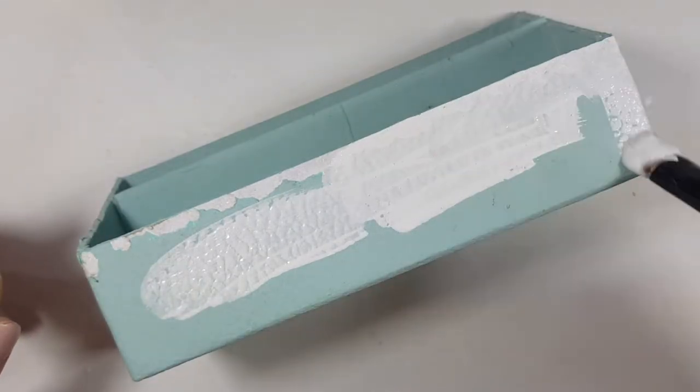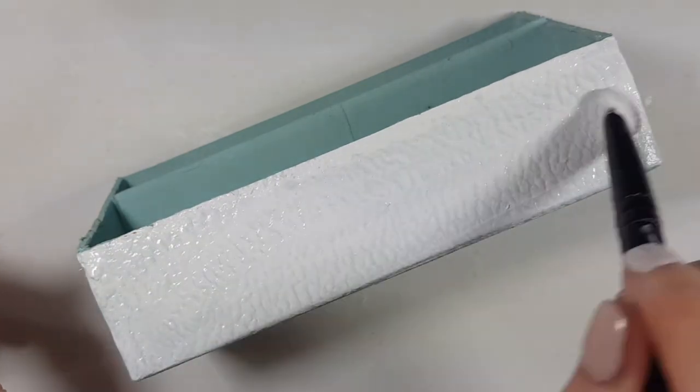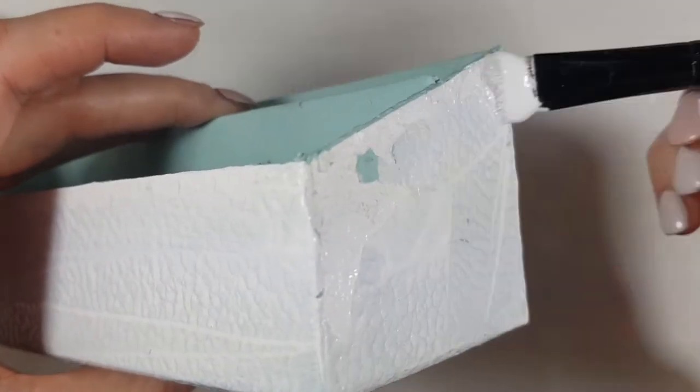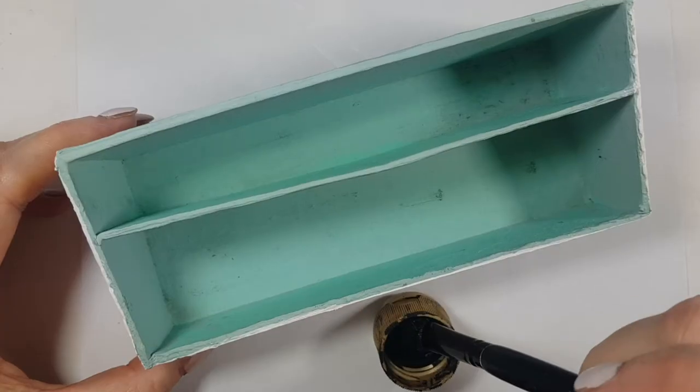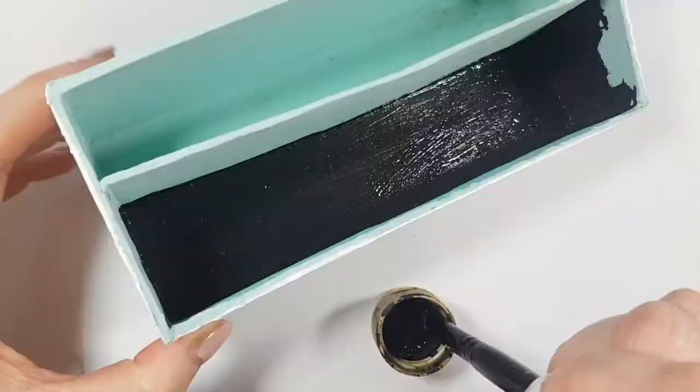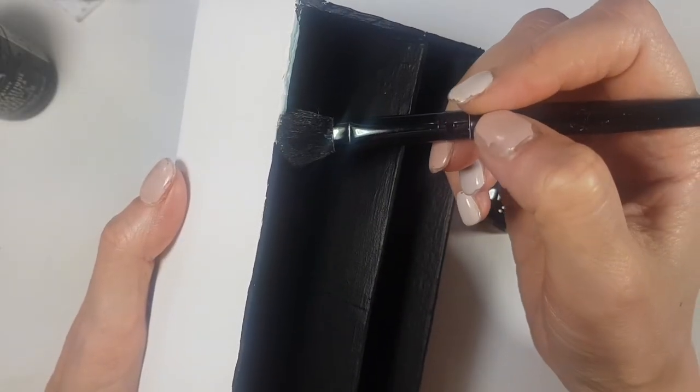But I decided to decorate it again. For that I'm using white acrylic paint and a brush, giving the outside thick coats until it's opaque. Then I'll use black acrylic paint for the insides. This is how I'm painting the edges, so if you use thicker boxes, this might be helpful.